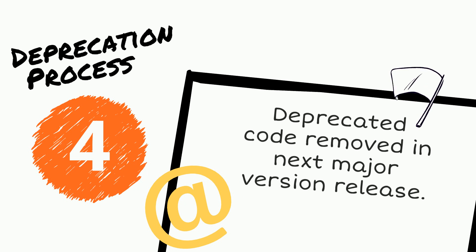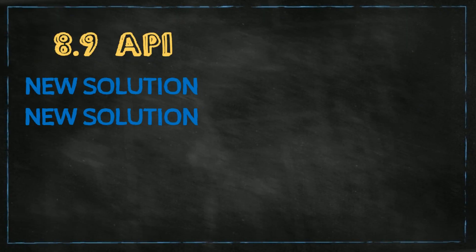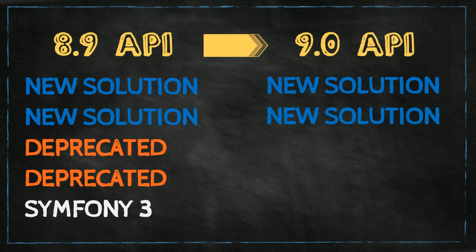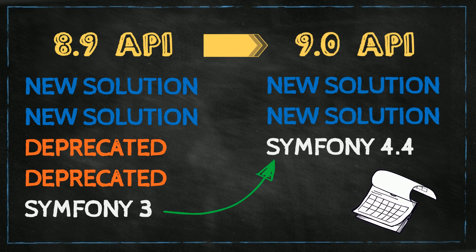Finally, the API deprecation process allows core developers to add new APIs and features in minor releases. Deprecated APIs are removed in major version updates and third-party dependencies are also updated. Developers are given ample time to upgrade their code to the new APIs.